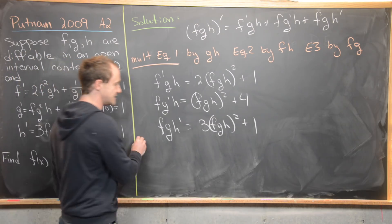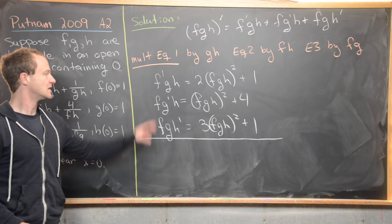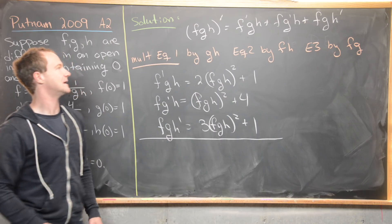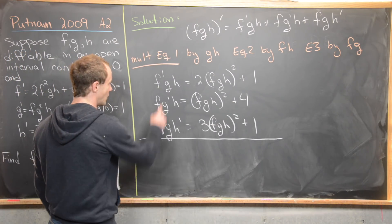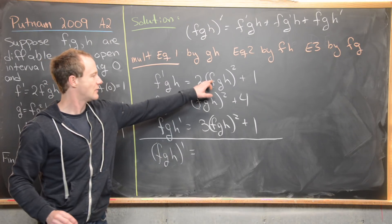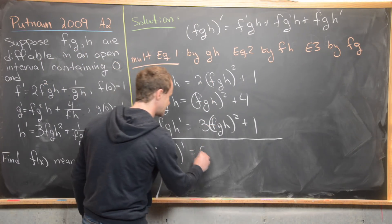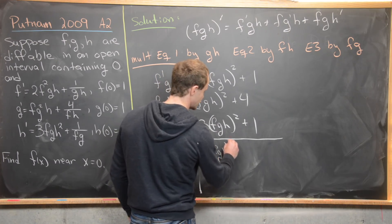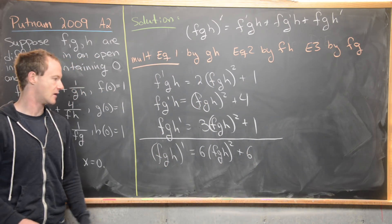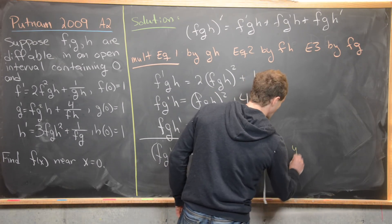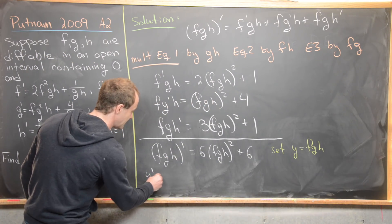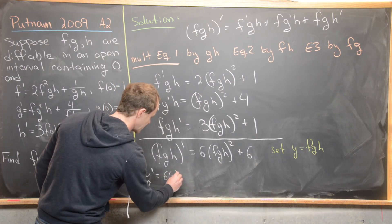Now we take the sum of these three equations. The left-hand side gives exactly f prime·gh plus fg prime·h plus fgh prime, which equals (fgh) prime. On the right-hand side, we combine like terms: (2+1+3)(fgh)² plus (1+4+1) = 6(fgh)² plus 6. Setting y equal to fgh, this simplifies to y prime equals 6(y² + 1).